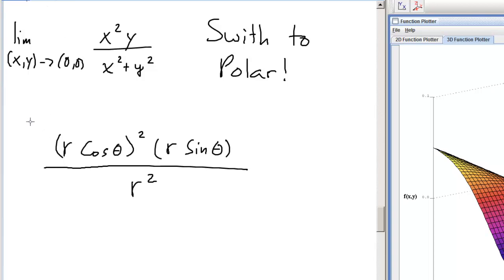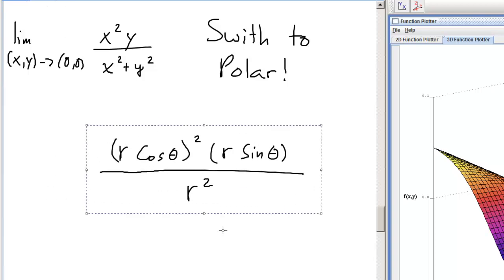Now, this is the important part right here. We've been doing limits where we have x and y goes to 0 and 0. And you might be tempted to write the limit as r and theta go to 0. But that's not the case.